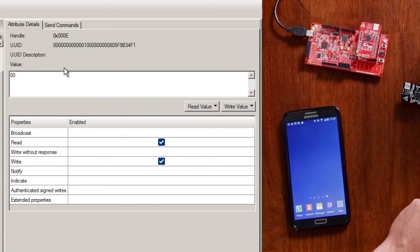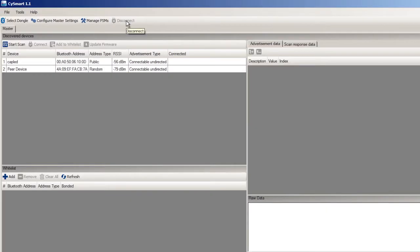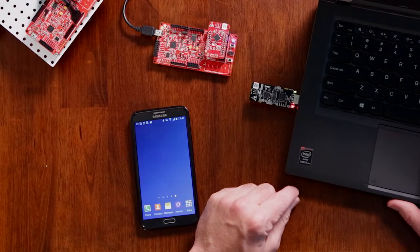So I'll put the LED back to zero. Okay, write value and then I will disconnect from the device and the blue LED will start blinking again.